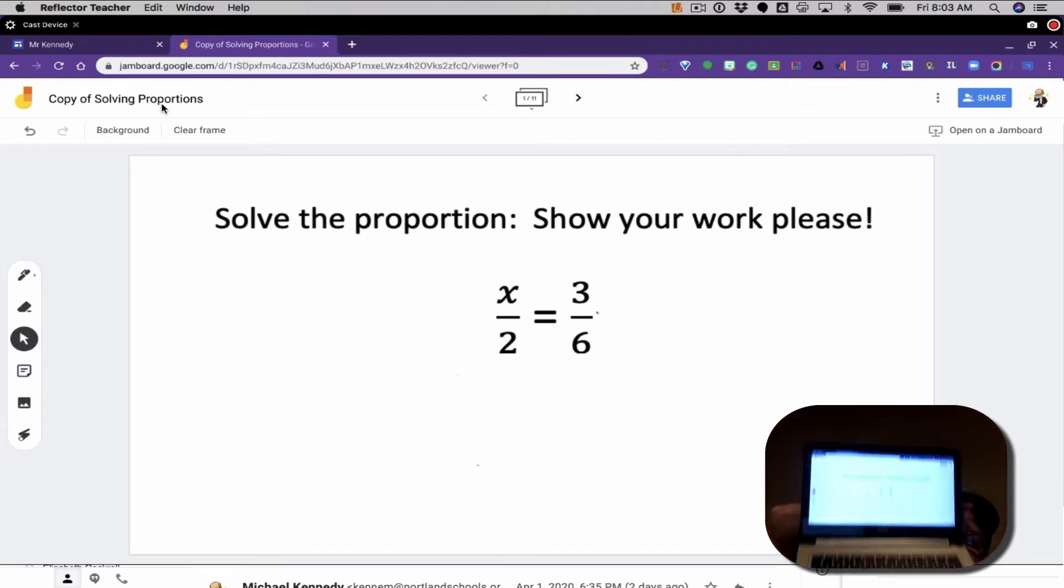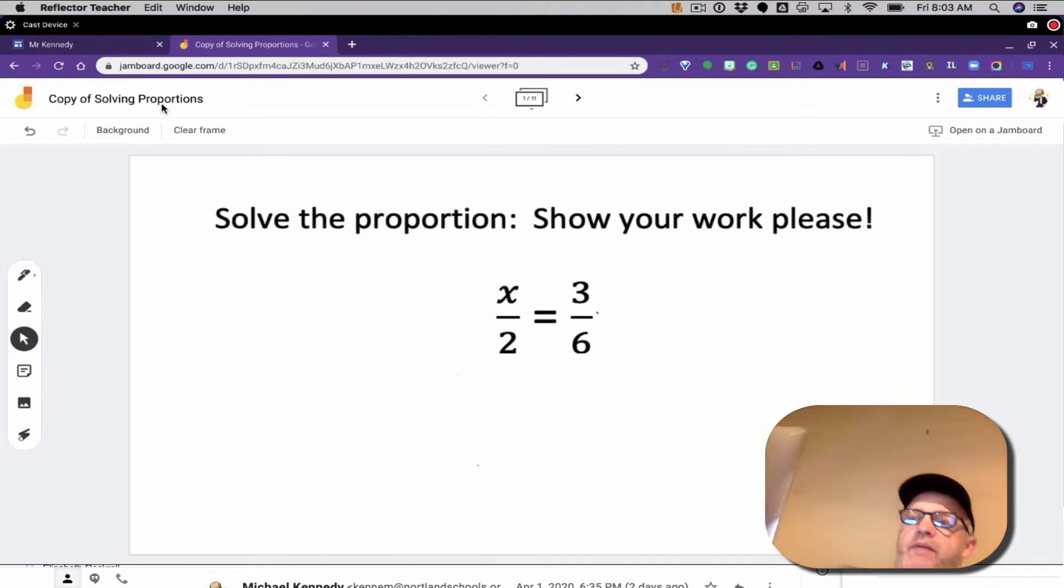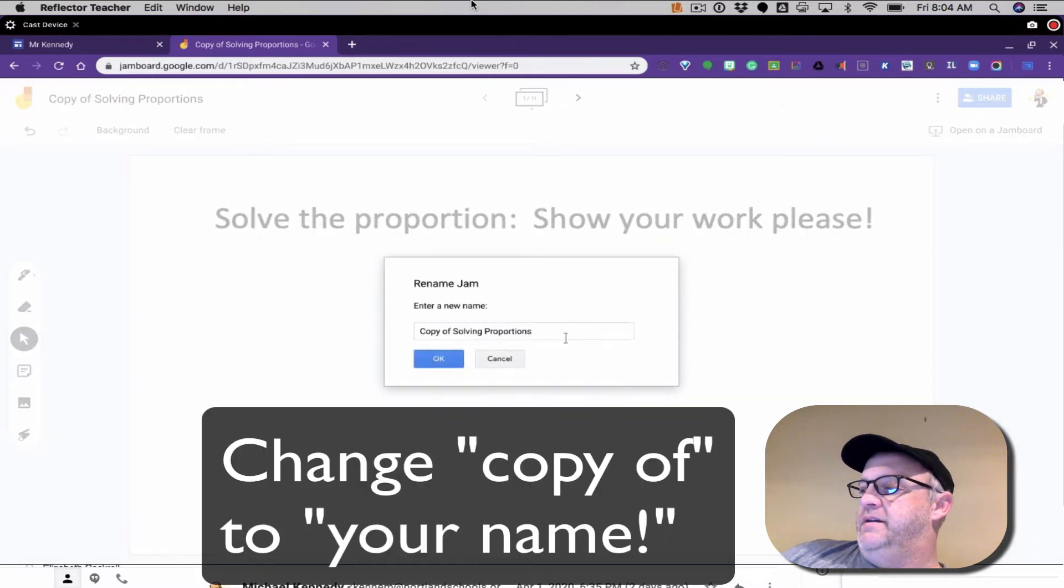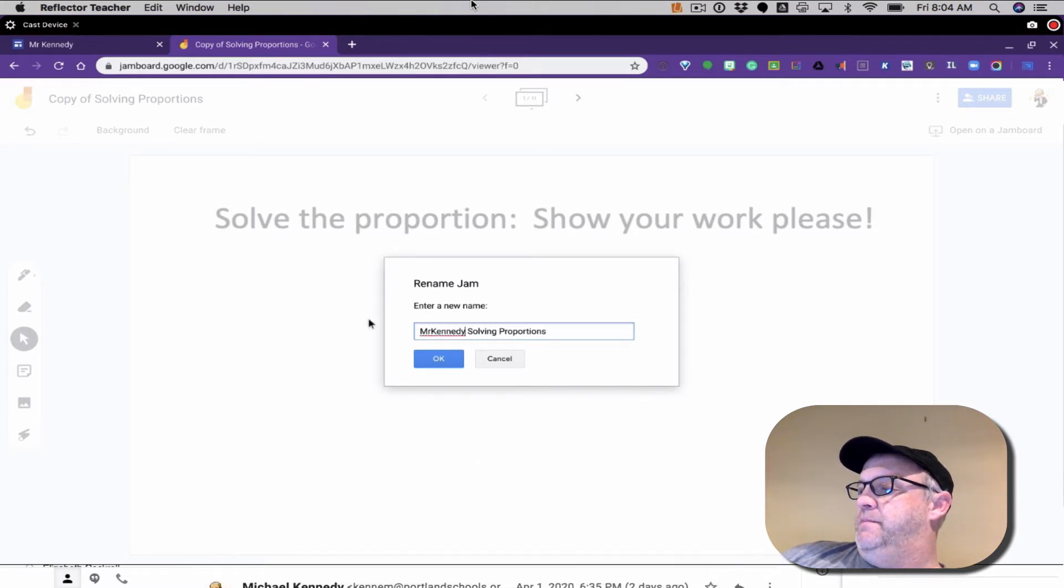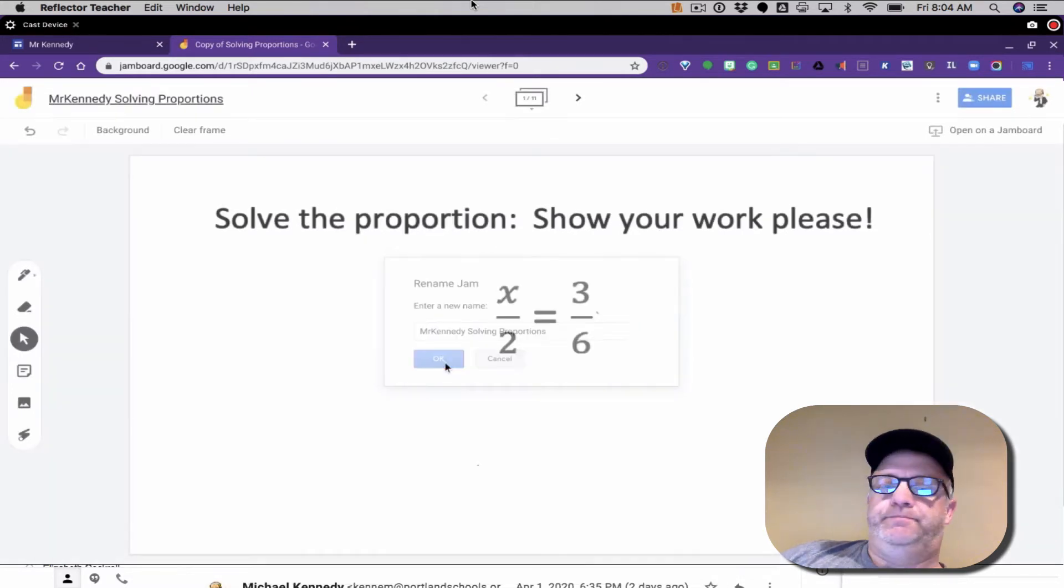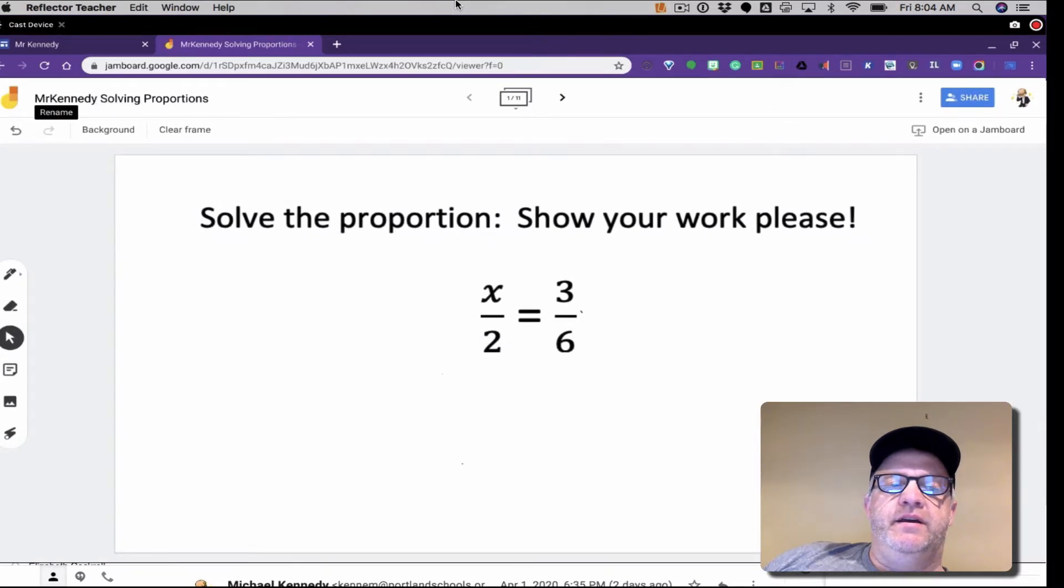Now, you know I am on a Chromebook and I'm making these adjustments. The first thing you need to do is change the name to your name so she knows who this is. We double-click that and change 'copy of' to your name. Click OK. Now your math teacher knows this is your Jamboard.